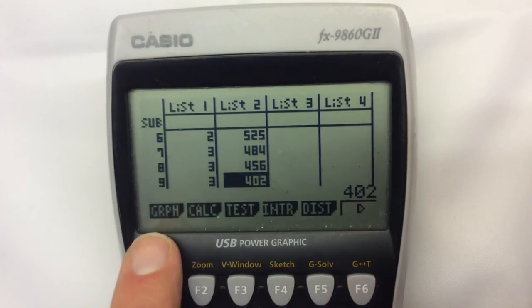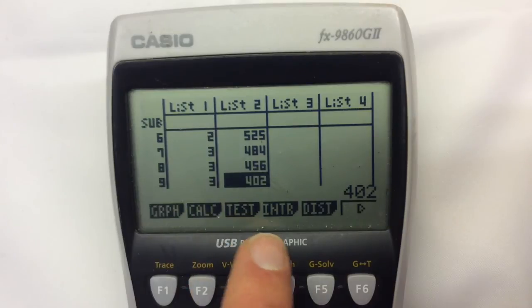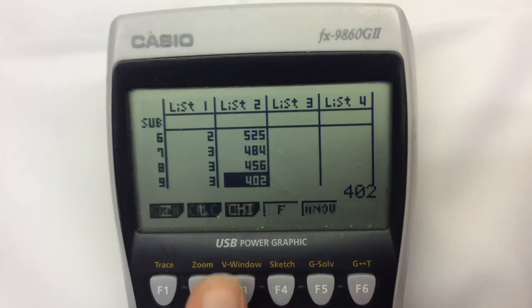Then, making sure that the bottom of the screen says graph, calculator, test, and so on, we want to do a specific form of statistical test. We're going to press the button under here.